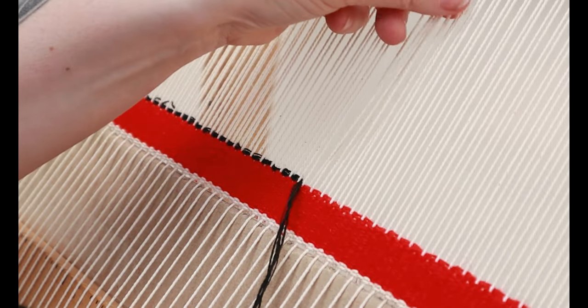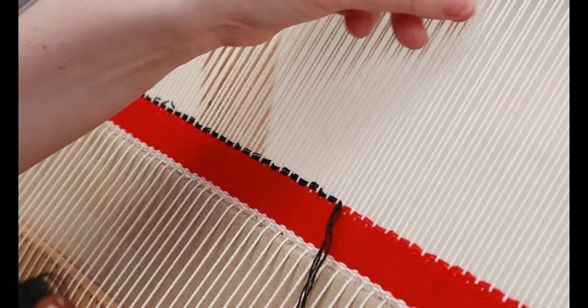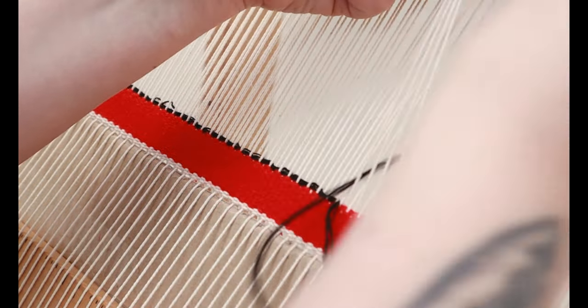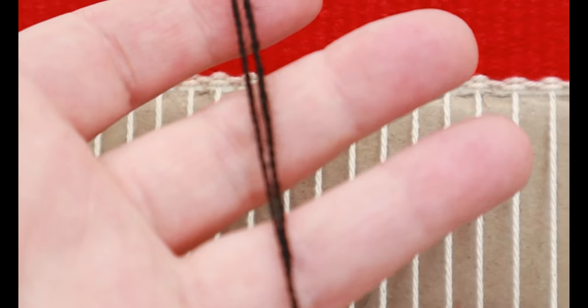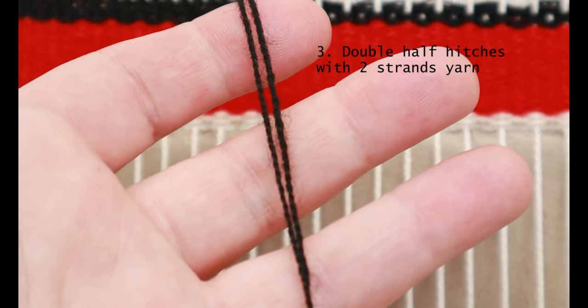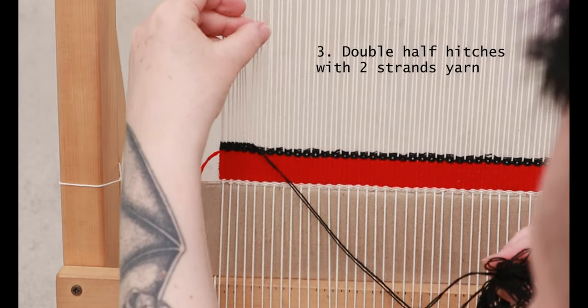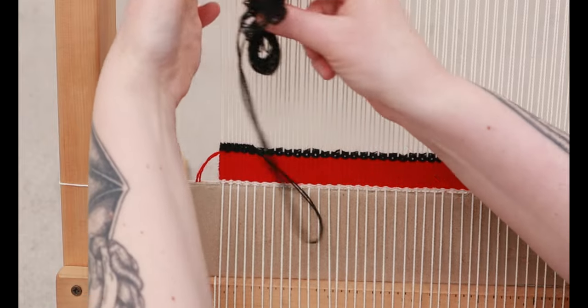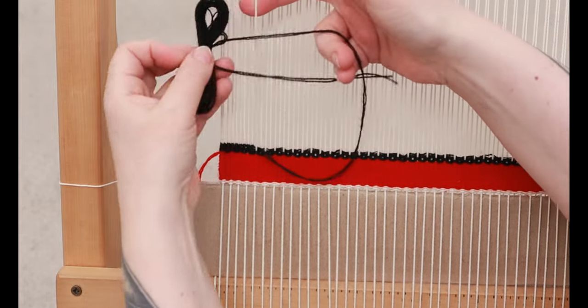When I say the main color, I mean whatever thread you're going to use for the bottom of the tapestry, usually the background. Now we're using two strands of yarn to do one row of double half hitches.